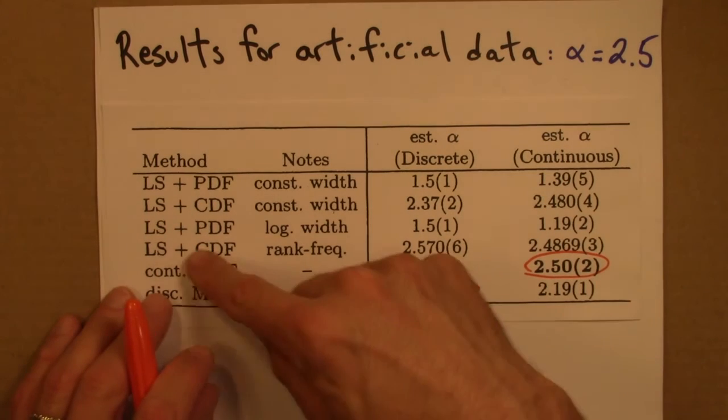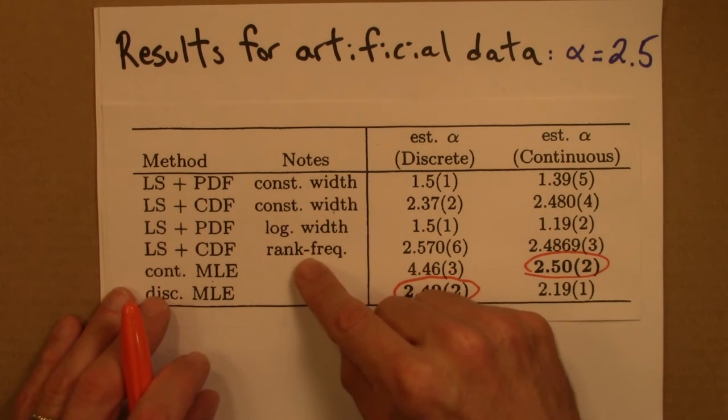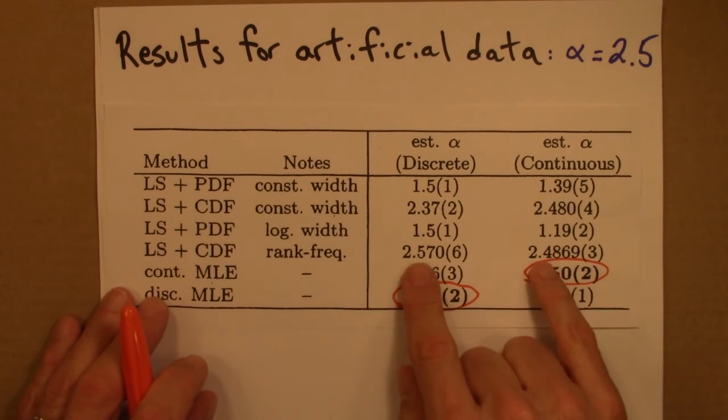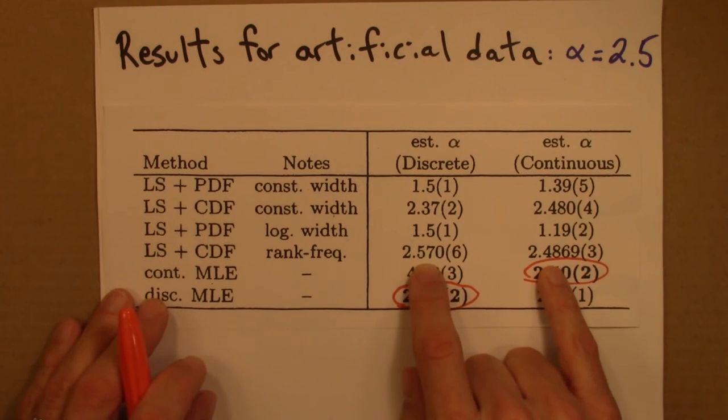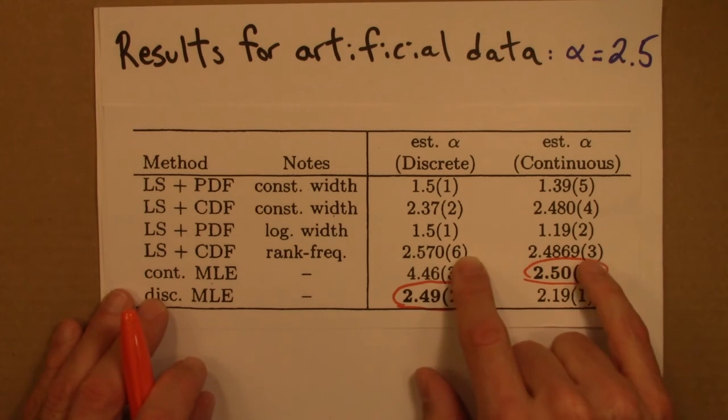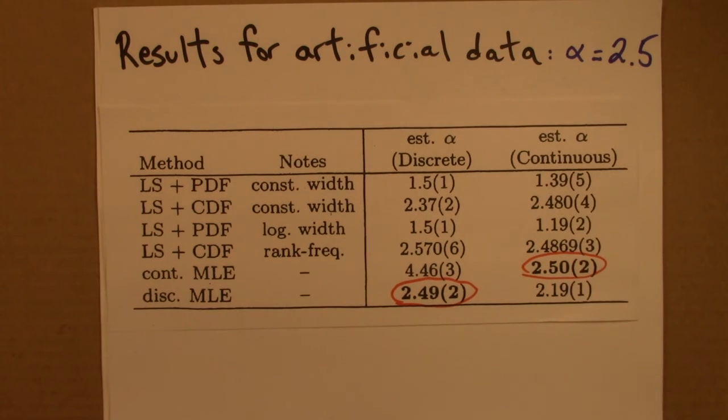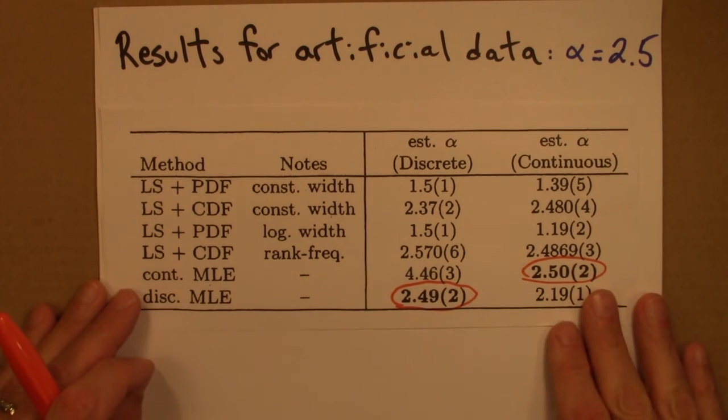If one does least squares fitting with a rank frequency plot, then one also gets results that are decent. 2.57, 2.487. But again, the error bars on these do not bracket the true value. I think the lesson from their paper to me is very, very clear.